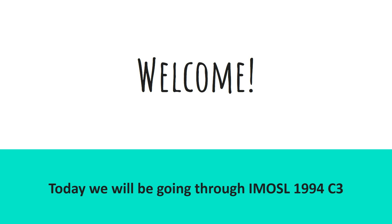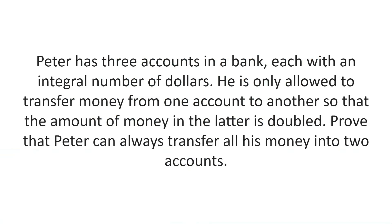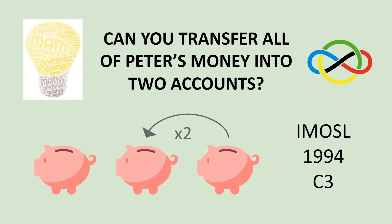Welcome. Today we'll be going through IMO shortlist 1994 C3. Peter has three accounts in a bank, each with an integral number of dollars. He is only allowed to transfer money from one account to another so that the amount of money in the latter is doubled. Prove that Peter can always transfer all of his money into two accounts. Please pause the video here and have a think about the problem on your own before proceeding to the hints and solutions.